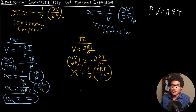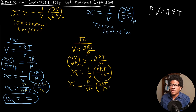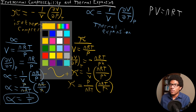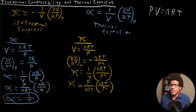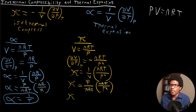This is again a fractional change in volume, so we don't want volume in the final answer. We plug in the inverse of volume, which is P/nRT, multiplied by nRT/P². The nRT cancels, and one of the pressures in the numerator cancels with one in the denominator, leaving us with kappa = 1/P.